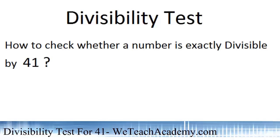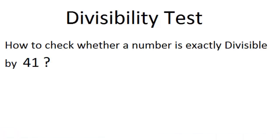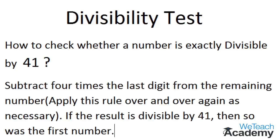Welcome to vdcheckacademy.com. In this presentation we are going to check the divisibility test on the number 41 — how to check whether a number is exactly divisible by 41. To check, subtract 4 times the last digit from the remaining number. Apply this rule over and over again as necessary. If the result is divisible by 41, then so was the original number. Now let us check this concept using examples.